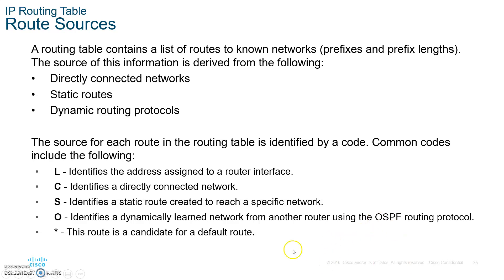These are the codes you will see in the routing table. Please jot these down. There are directly connected networks. Static routes you'll see with the letter S. Dynamic routing protocols use letters like O or D — O for OSPF, D for DUAL, which is the algorithm used by EIGRP, or R for RIP. Link L identifies the actual interface of the default gateway, and the star is a candidate for a default route.